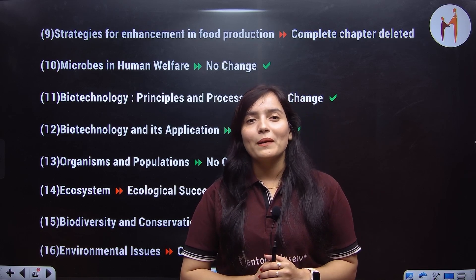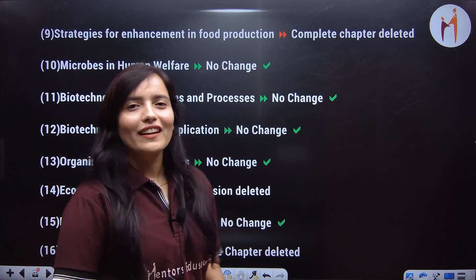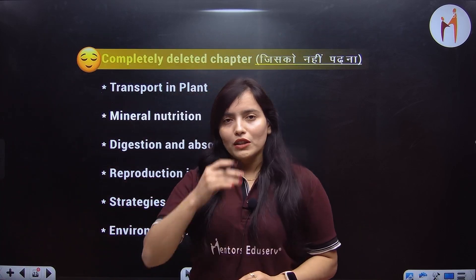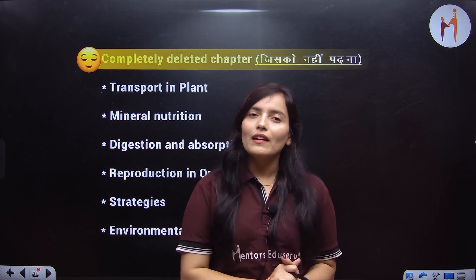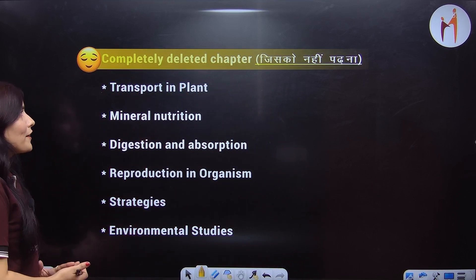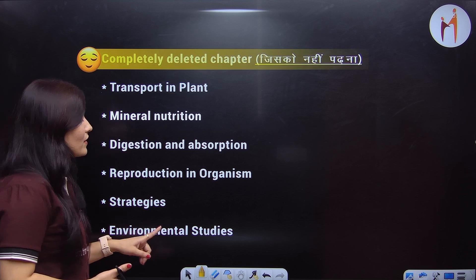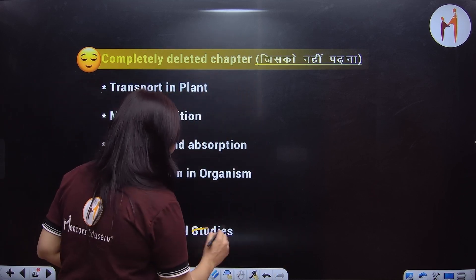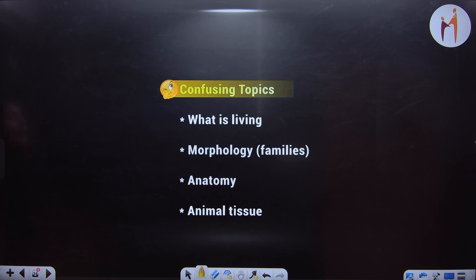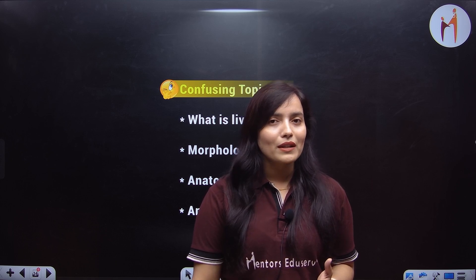Overall, across physics, chemistry, and biology, chapters have been reduced from 97 to 79. There are some topics in biology that have been added, which I have told you. To draw a conclusion: chapters that are completely deleted in the new NCERT you can leave — like transport in plants, mineral nutrition, digestion and absorption, reproduction in organisms, strategies for enhancement in food production, and environmental issues. These chapters are completely deleted, so you can leave them.